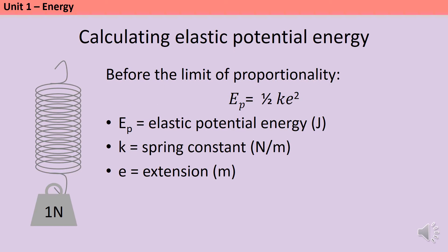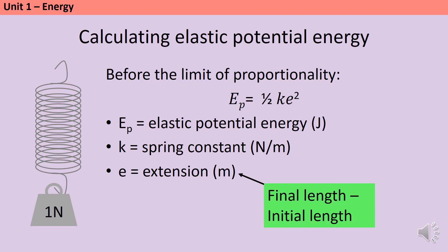As long as a spring hasn't reached its limit of proportionality, we can calculate its elastic potential energy using this formula: E_p = ½ × k × e². Capital E is energy, and the subscript p tells us it's a type of potential energy — here elastic potential energy. k is the spring constant, which is different for every spring, and e is the extension — how much longer the spring is compared to when no force acts on it, calculated as final length minus initial length. Note that the squared term only refers to e, the extension, not everything before it — you'd need brackets if you were squaring everything.